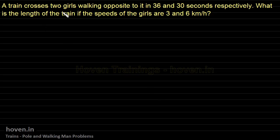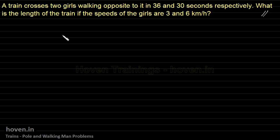A train crosses two girls walking opposite to it in 36 and 30 seconds respectively — one girl is crossed in 36 seconds, the other in 30 seconds. What is the length of the train if the speeds of the girls are 3 and 6 kilometers per hour? This is a straightforward question: we take two cases, set up equations, and determine the length of the train.